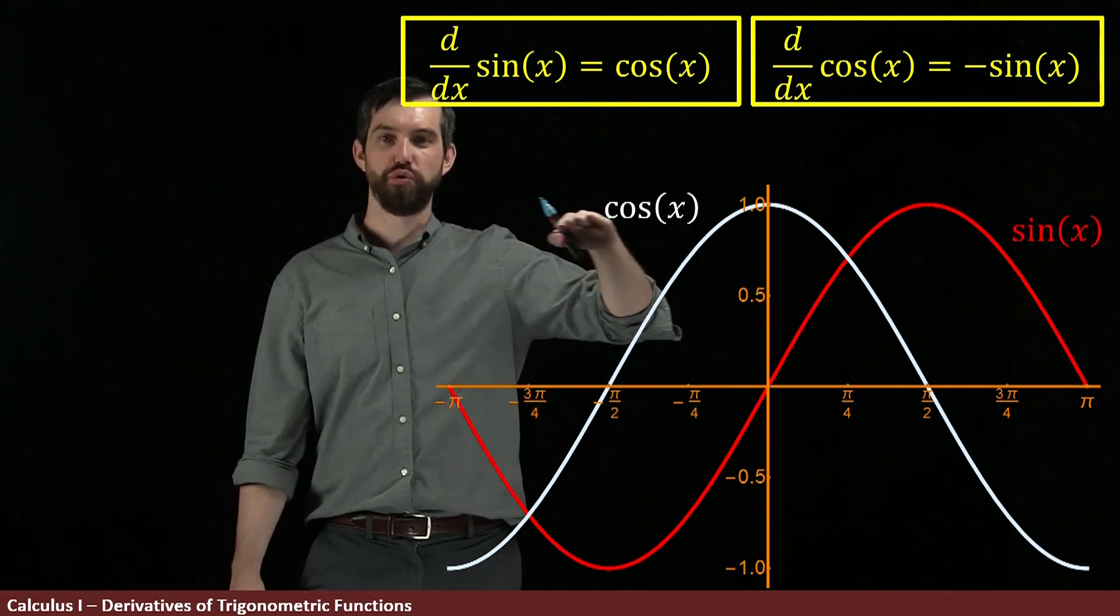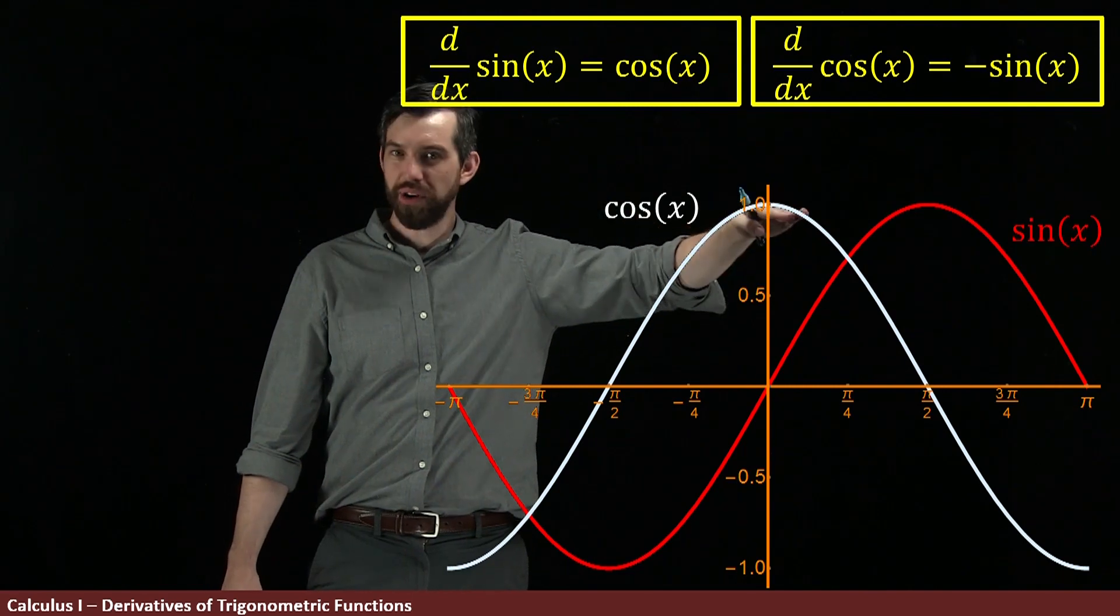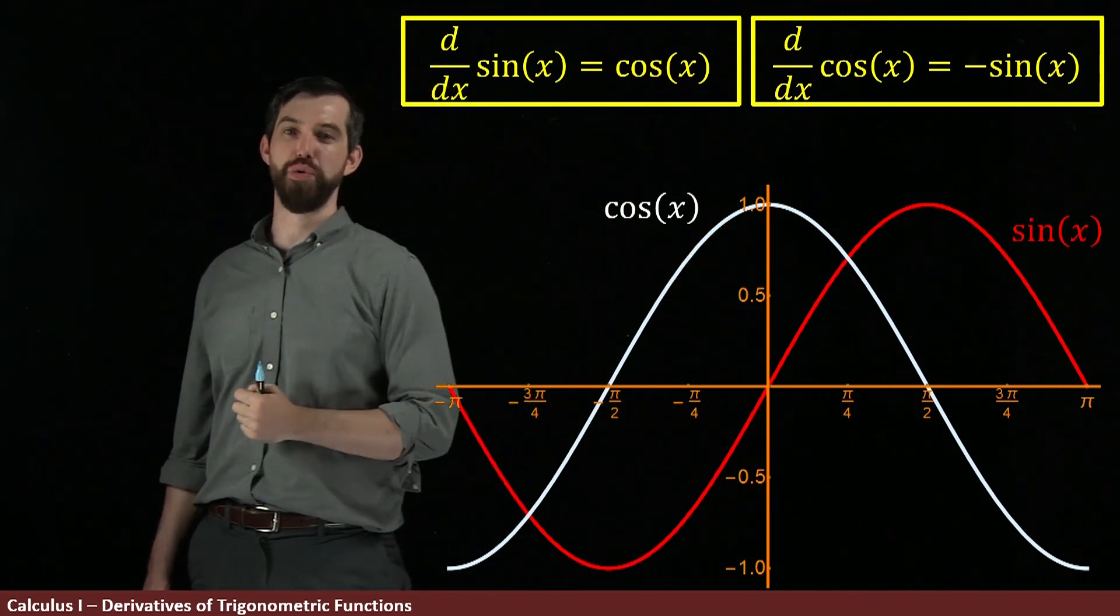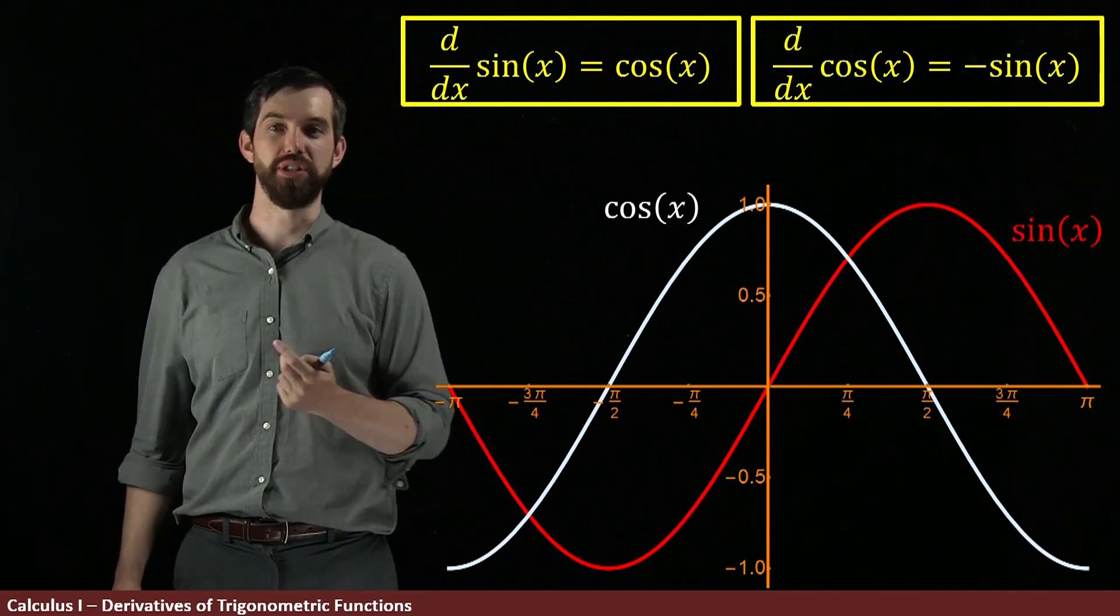For example, if I look at the derivative of cosine at zero, it's horizontal. This is the same thing as the value of minus sine of zero, it's minus zero, which is zero.